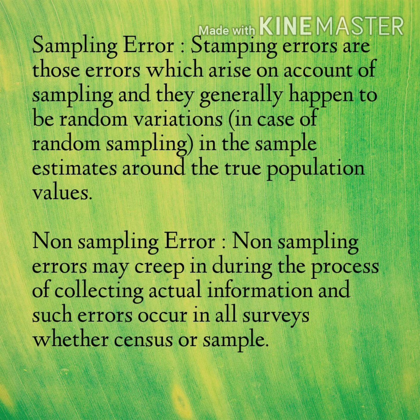Now I am going to discuss sampling error and non-sampling error. Sampling errors are those errors which arise on account of sampling — they generally happen to be random variations in the case of random sampling in the sample estimates around the true population values. Sampling error is a statistical error that occurs when an analyst does not select a sample that represents the entire population of data. Since the sample does not include all members of the population, some measurements such as mean, median, quartile, etc. on the sample — generally known as statistics — differ from the characteristics of the entire population, which are known as parameters.